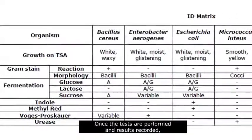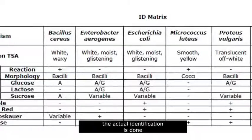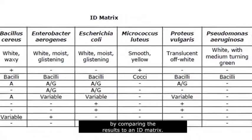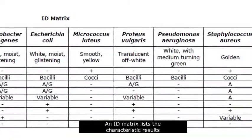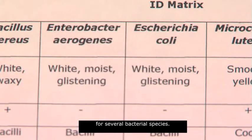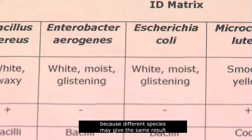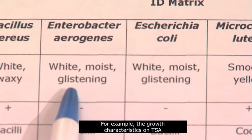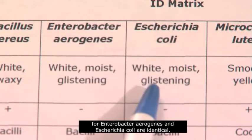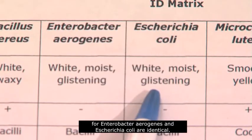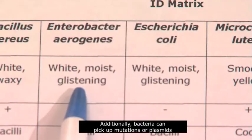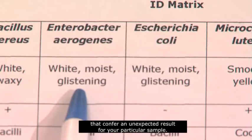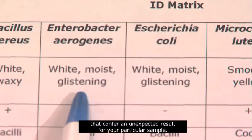Once the tests are performed and results recorded, the actual identification is done by comparing the results to an ID matrix. An ID matrix lists the characteristic results for several bacterial species. A single test result cannot give an accurate identification, because different species may give the same result for any single test. For example, the growth characteristics on TSA for Enterobacter aerogenes and Escherichia coli are identical. Additionally, bacteria can pick up mutations or plasmids that confer an unexpected result for your particular sample.